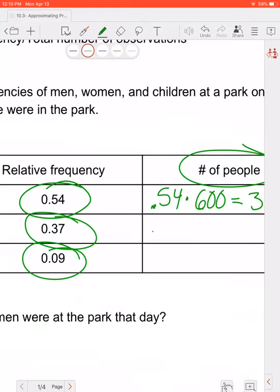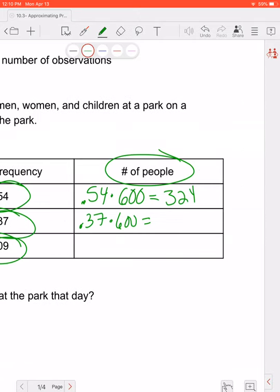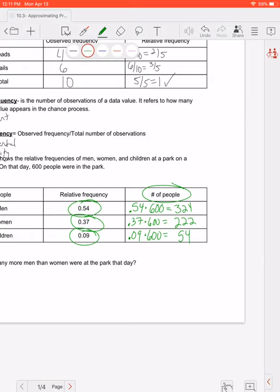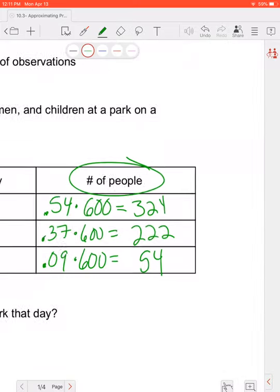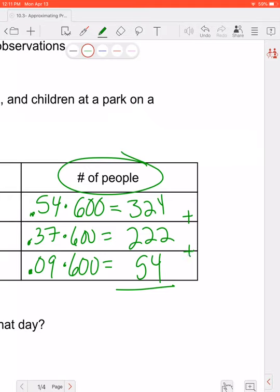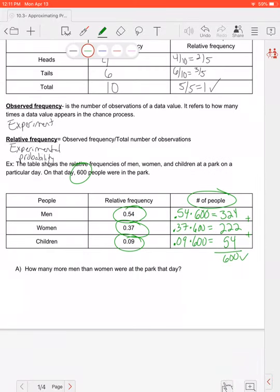We're going to do the same thing with women. So we're going to do 0.37 times the total 600, which equals 222. And then with children we have 0.09 times 600, and there might be less children just because their parents are with them. So there's only 54 children. Maybe we just have a lot of people going for a walk and just some children on the playground. So just to double check my work, I'm going to add up 324 plus 222 plus 54 just to make sure that adds up to a total of 600. And since I knew there were 600 people in the park I've done all of my math correctly. So it says how many more men than women were at the park? Well we're going to do 324 minus 222 which would be 102. So there are 102 more men than women at the park that day.